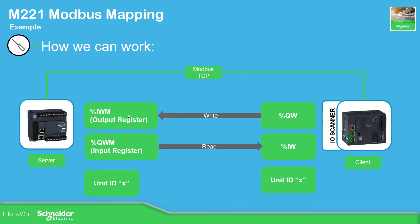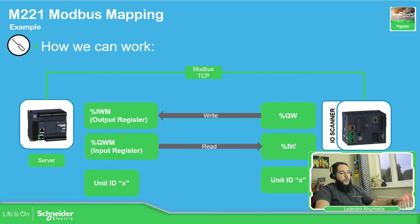The %QWM area is called the output register — output meaning from the other side. All the information is coming from the other side, and I write it from the M262 into the M221. The %QWM, which would be the input register, is for reading from the other side. It's a little confusing now, but when we go into both software tools we can see the difference.